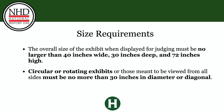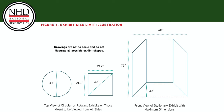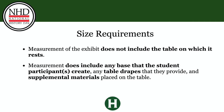The exhibit must be no taller than 72 inches high. Circular or rotating exhibits, or those meant to be viewed from all sides, must be no more than 30 inches in diameter or diagonally. Here we have an illustration to show that. Measurement of the exhibit does not include the table on which it rests, but does include any base that the student participants create, any table drapes that they provide, and supplemental materials placed on the table.